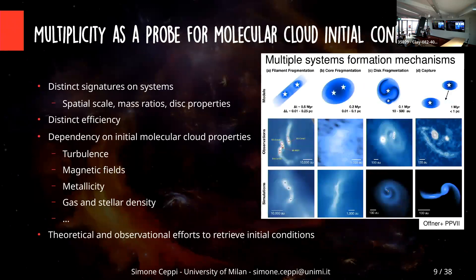All these kinds of systems form through different channels of formation: filament fragmentation, core fragmentation, disk fragmentation, and capture. Each of these formation channels leaves different signatures on the population of multiple stellar systems they form and has different efficiency in forming multiple stellar systems. These signatures and efficiencies depend on the properties of the initial conditions for star formation — essentially the properties of the molecular clouds. So what I think is very interesting is that studying the distribution of parameters of multiple stellar systems, we are able to say something about initial conditions that are harder to directly observe.